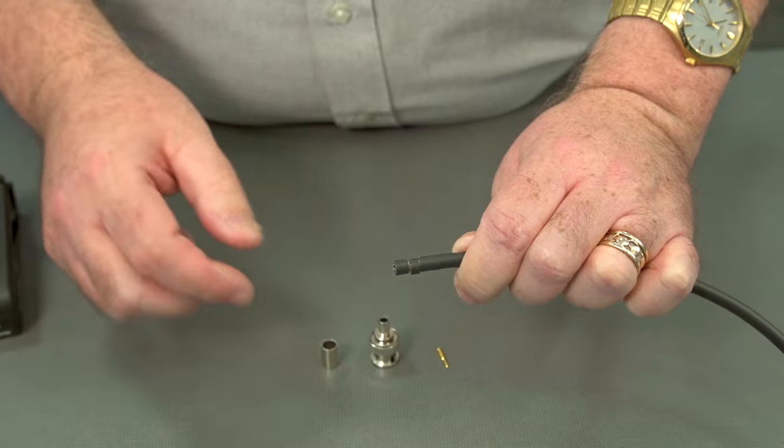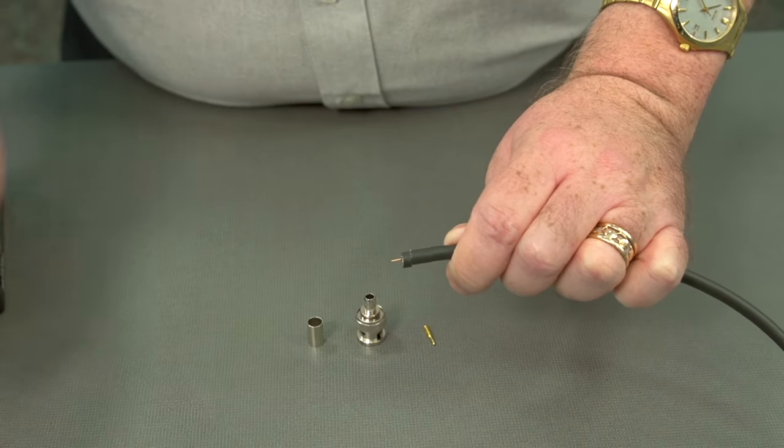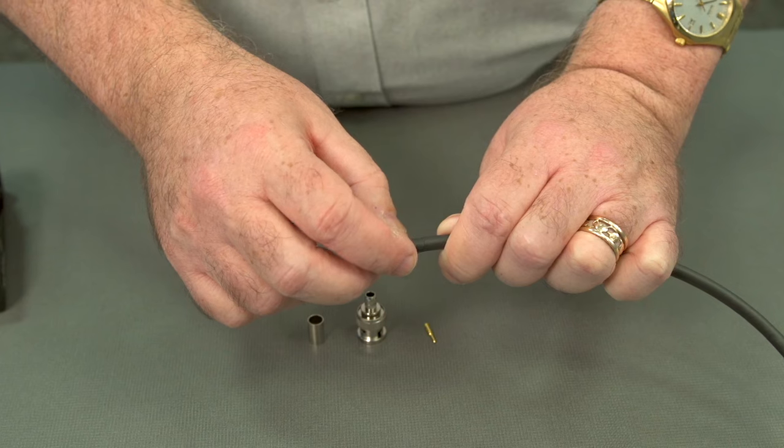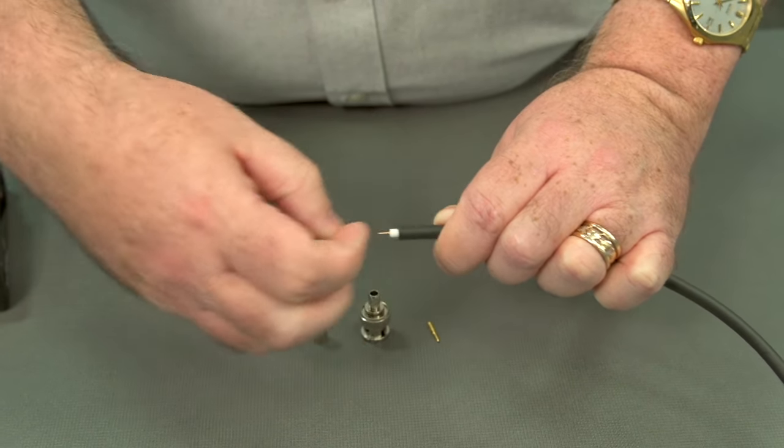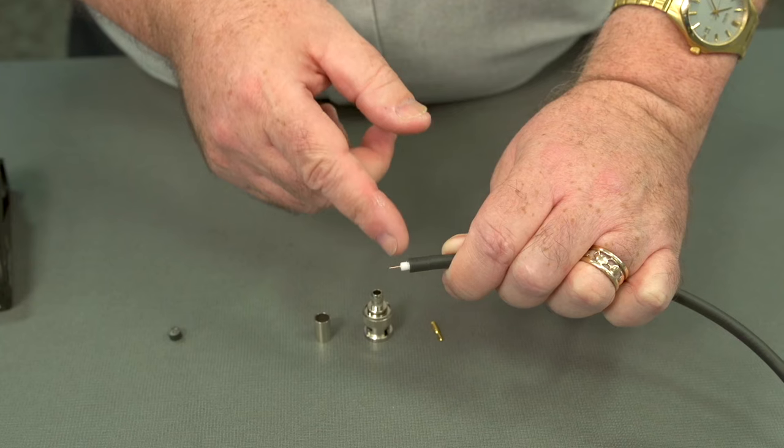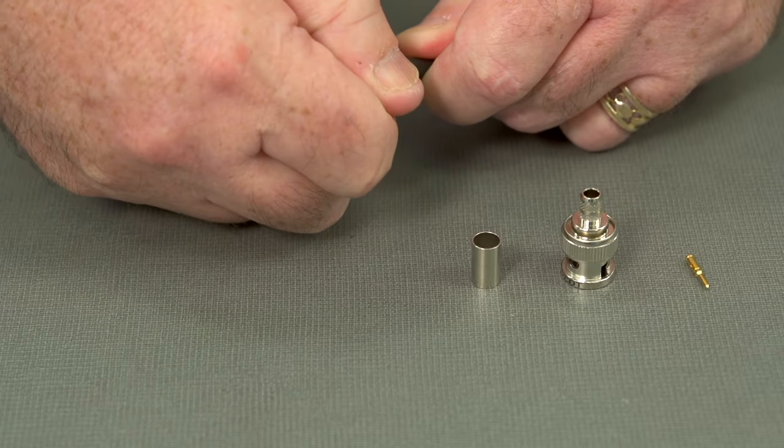Now let's look at our parts. This is coax. We have our center conductor. We have just some of the white dielectric, and then under this third cut.